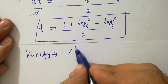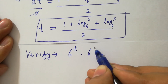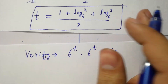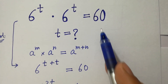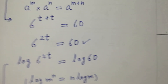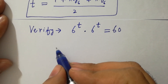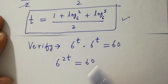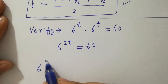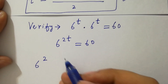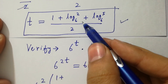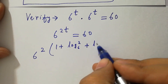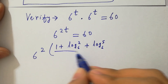Verification: 6 to the power t times 6 to the power t equals 60. This equals 6 to the power 2t equals 60. Now put the value of t: 6 to the power 2 times the quantity 1 plus log 2 to the base 6 plus log 5 to the base 6 over 2.